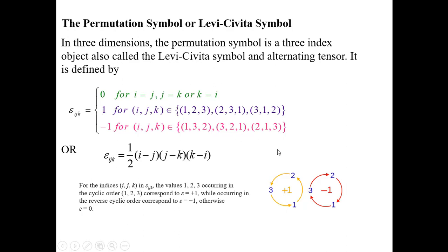If you take the anti-clockwise order, you get the triplets (1,3,2), (3,2,1), and (2,1,3). These three ordered triplets correspond to epsilon_ijk equal to -1.